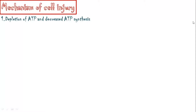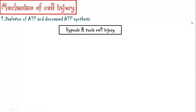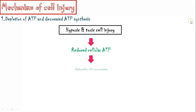Now let's discuss about the mechanism of cell injury. The first mechanism is ATP depletion and decreased ATP synthesis. Most often, ATP depletion is a result of hypoxia or toxic injury. Due to the reduced oxygen supply, the activity of the electron transport chain decreases, causing a reduction in ATP synthesis. The activity of the sodium-potassium pump depends on intracellular ATP, so as the ATP level decreases, sodium-potassium pump activity also decreases.